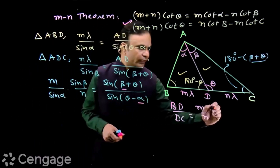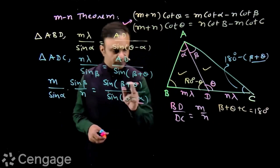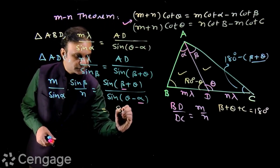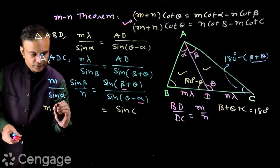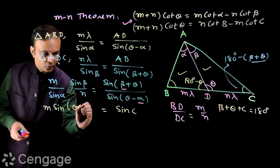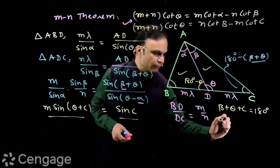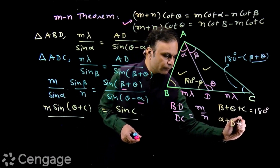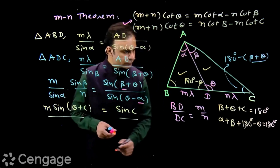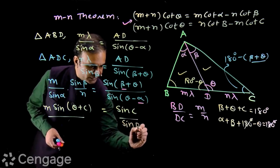In triangle ADC, beta plus theta plus C equals 180 degrees, so beta plus theta equals 180 degrees minus C, meaning sin(beta + theta) equals sin C. Also, m times sin beta becomes sin(180 degrees minus (theta + C)), which gives sin(theta + C). In triangle ABD, alpha plus B plus (180 degrees minus theta) equals 180 degrees, so theta minus alpha equals angle B, meaning sin B appears in the denominator.